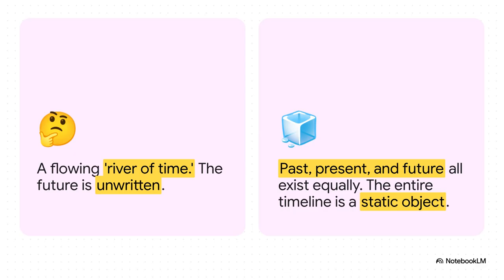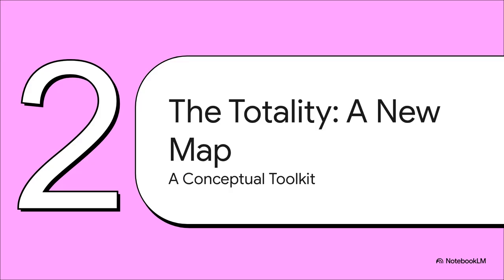But then you've got physics, specifically one interpretation of relativity, which gives us something called the block universe. And in that model, the past, the present, and the future, they all exist right now simultaneously. The whole timeline is just there. So how in the world do you square that circle? How do you connect those two completely different ideas?